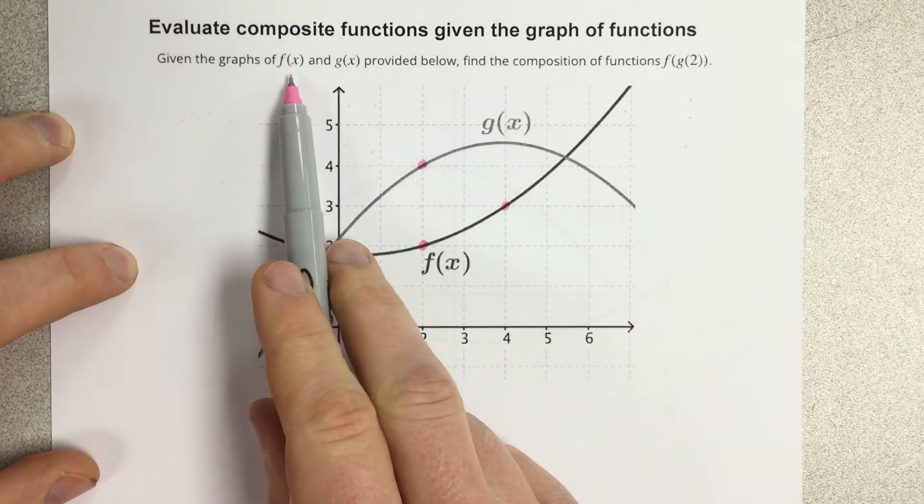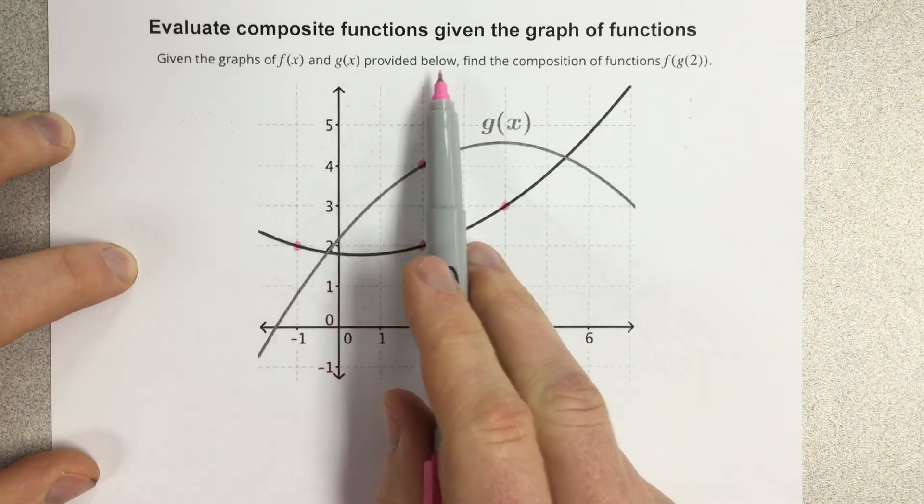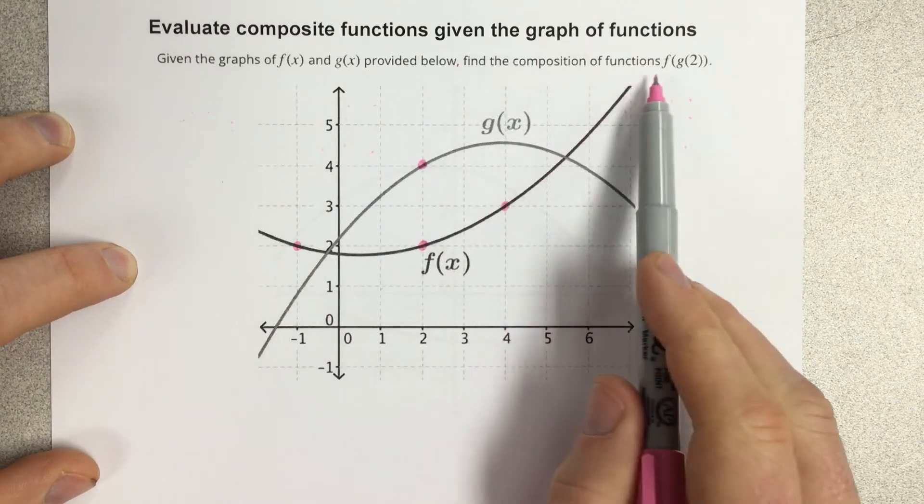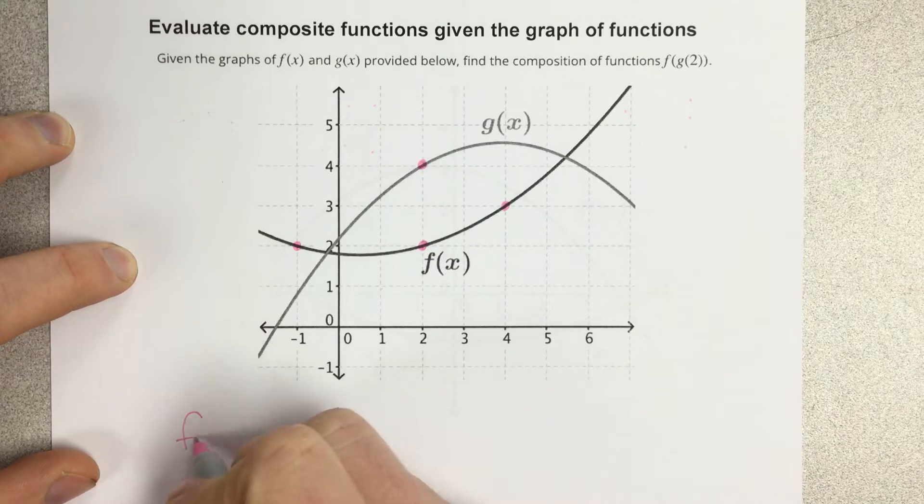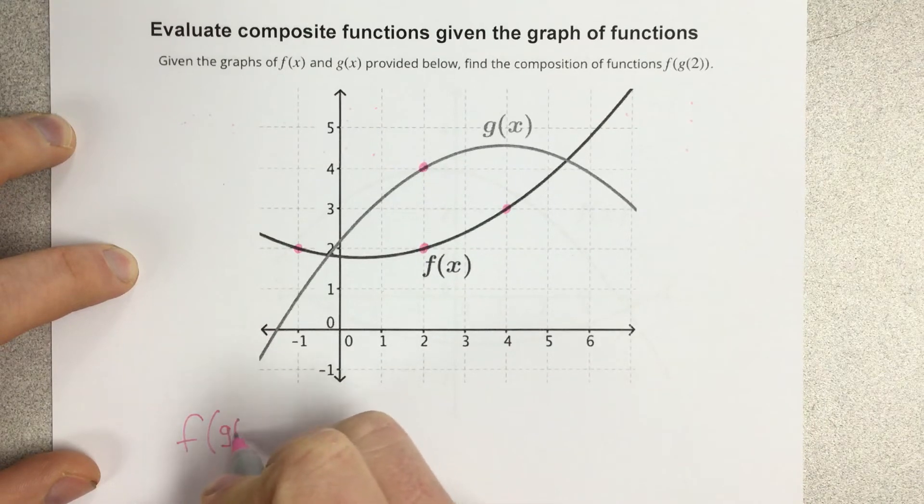It says, given the graphs of f of x and g of x provided below, find the composition of functions f of g of 2. So let's write out f of g of 2 and start solving.